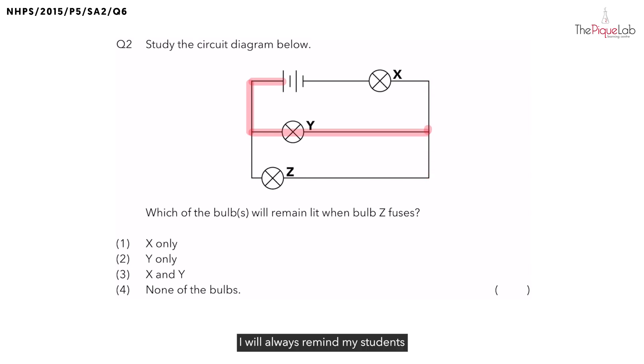I will always remind my students that when electric current flows up from one terminal of the battery, electric current has to return to the other terminal of the battery. So over here, electric current should flow up through the wires, through bulb X, and then return to this other terminal of the battery.